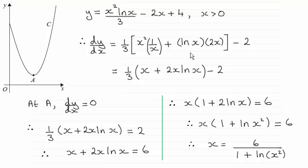So for the product rule here, remember you take one part, that's the x-squared here, multiply it by the differential of the other part. So differential of natural log of x is 1 over x.